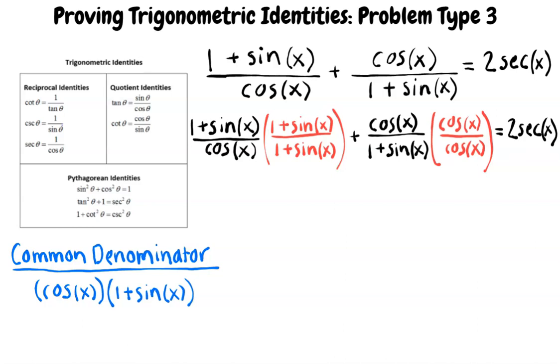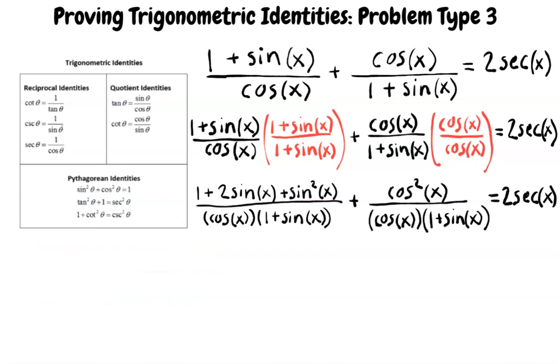Now we must simplify. Do you want to walk me through this step? Sure. We will use the distributive property for both numerators to get 1 plus 2 sine x plus sine squared x over cosine x times 1 plus sine x plus cosine squared x over cosine x times 1 plus sine x.